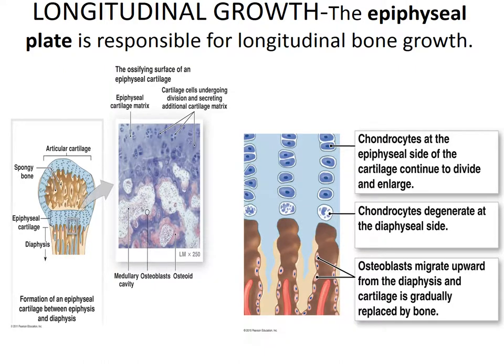The next topic is growth of bone. Growth of bone occurs by two primary processes: longitudinal growth, which gives length to bones, and appositional growth, which allows bones to grow in width or diameter.